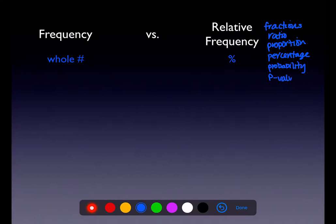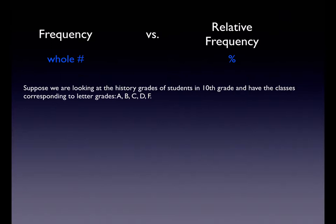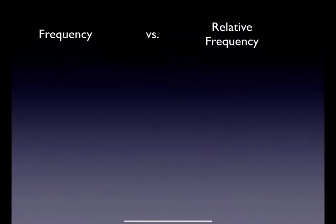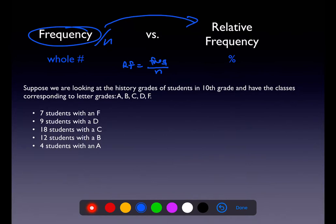We have percentage, and when we get to Chapter 3 we'll talk about probability, and in Chapter 9 we'll talk about p-values. All of these are numbers between 0 and 1. Suppose you had a history class of sophomores with these letter grades: 7 students with an F, 9 with a D, and so on — you're looking at frequencies. To convert them to relative frequencies, we take our frequency and divide by sample size. To go back from relative frequency to frequency, you multiply by sample size.